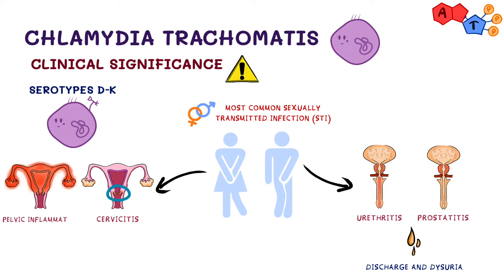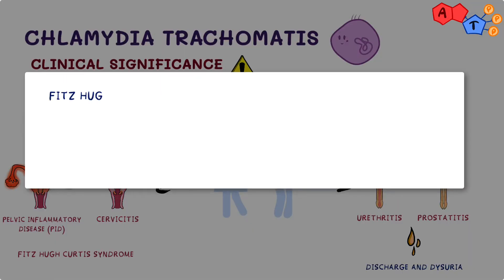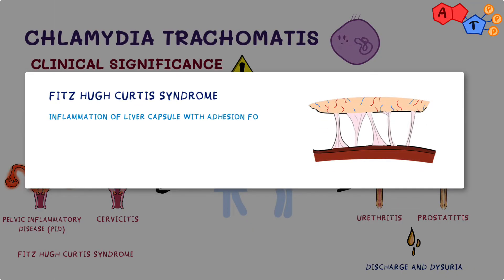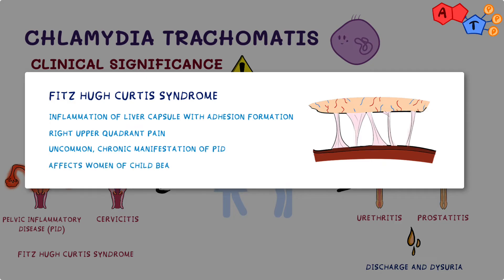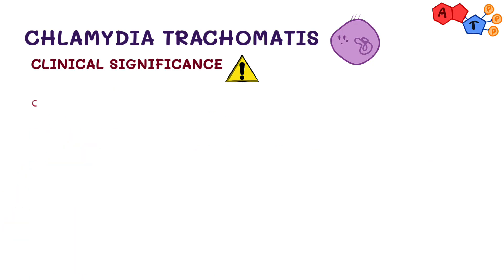In women, serotypes D to K cause cervicitis, and this inflammation can progress to PID — pelvic inflammatory disease — and can also cause Fitz-Hugh-Curtis syndrome. Fitz-Hugh-Curtis syndrome is an inflammation of the liver capsule with adhesion formation, resulting in right upper quadrant pain. It is an uncommon chronic manifestation of pelvic inflammatory disease affecting women of childbearing age.